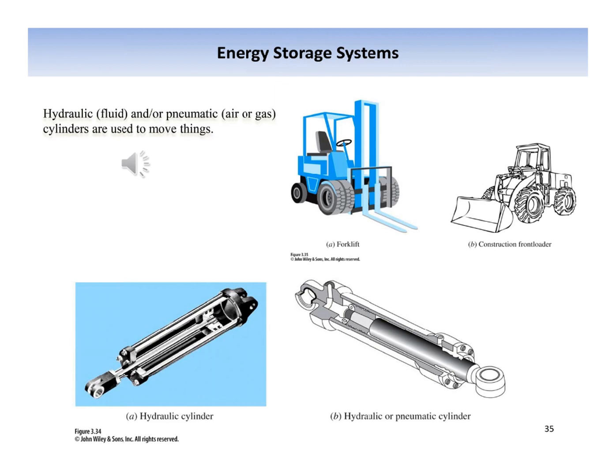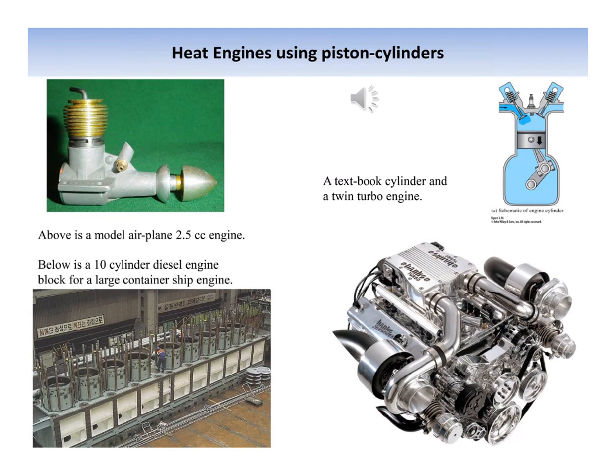Examples of hydraulic equipment include a bulldozer, forklift, front loader, and backhoe. We also consider cases where the substance inside the piston-cylinder undergoes a combustion process, as in gasoline and diesel engines. A schematic of an engine cylinder is shown, and this subject is discussed in detail in Chapter 10.